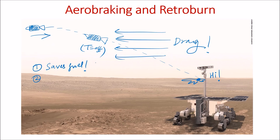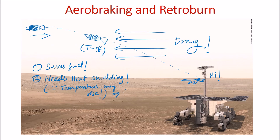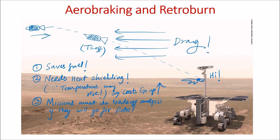You keep your thrusters off so you don't have to spend fuel, and the Martian drag slows you down so you can land. The benefits of aerobraking: first, it saves fuel. One very important point, however, is that you need heat shields — because entering the atmosphere heats up your spacecraft. Adding heat shields increases weight and cost. So you need to do a trade-off study between using aerobraking versus firing your thrusters all the way down when landing on Mars.